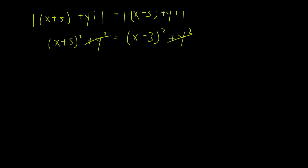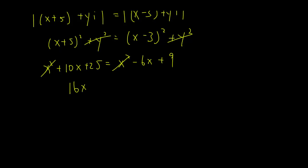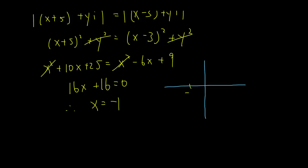Now we expand the brackets: x squared plus 10x plus 25 equals x squared minus 6x plus 9. The x squared terms cancel on both sides, leaving 16x plus 16 equals zero, so therefore x equals negative one.